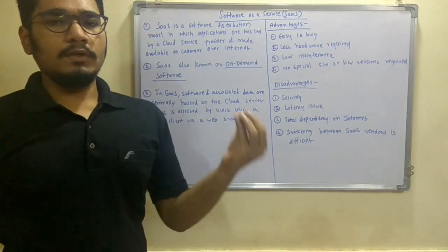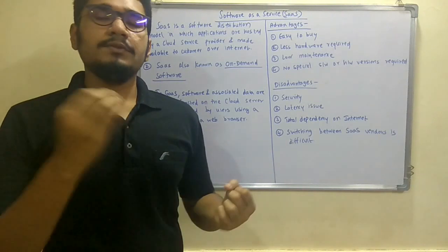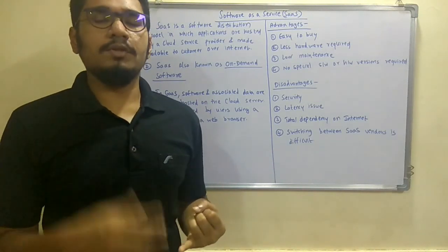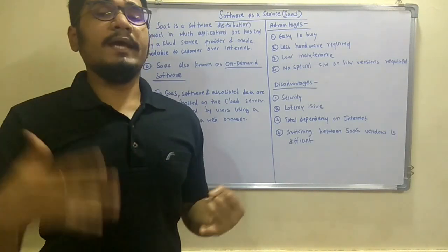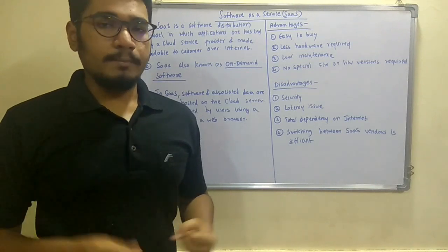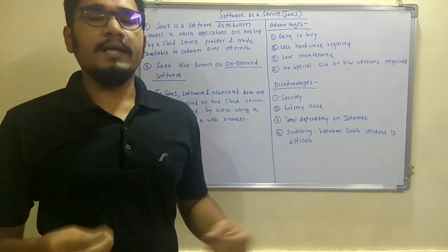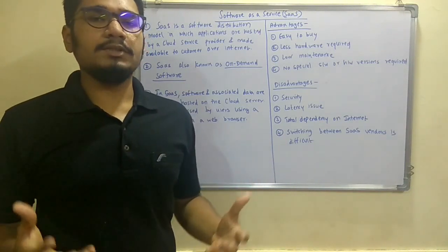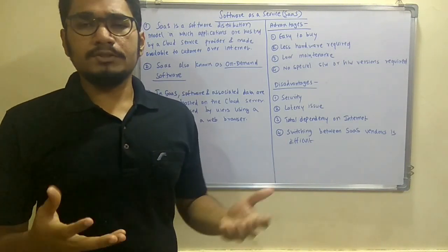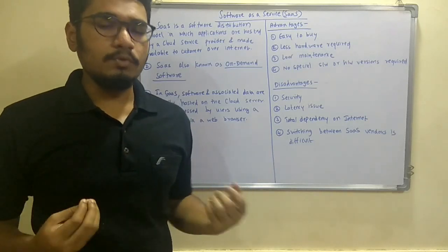First, we had IaaS, Infrastructure as a Service, which provides different kinds of infrastructure virtually over different machines. Then we had PaaS, Platform as a Service, which allows developers and testers to write, deploy, test, run, and manage their applications so that the need for infrastructure is completely removed.